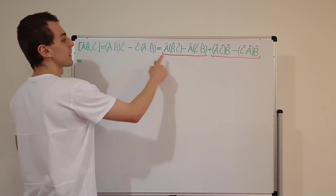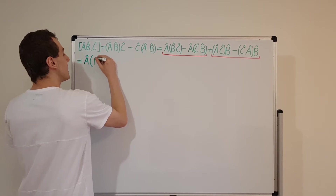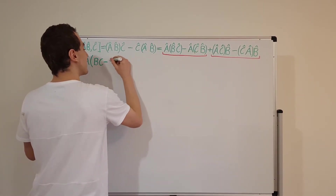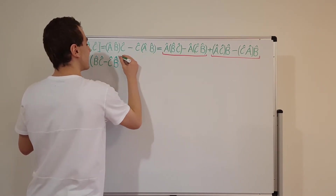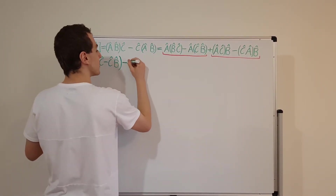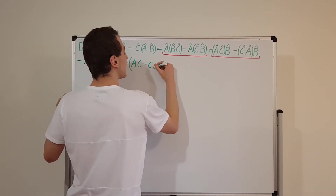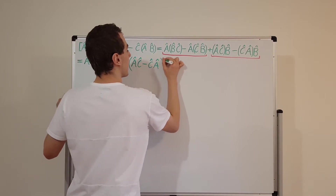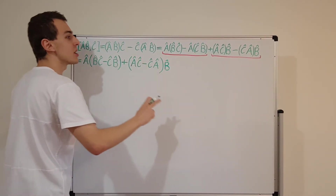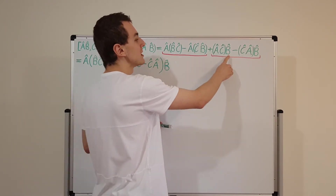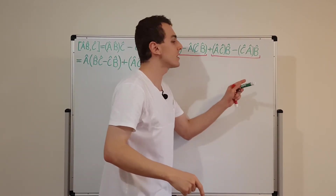This is going to be equal to a times (b·c minus c·b), plus (a·c minus c·a) times b. I can't move these operators around because in general they are not commutative. If you were working with real numbers you'd be free to swap them, but here we have to keep the order consistent.